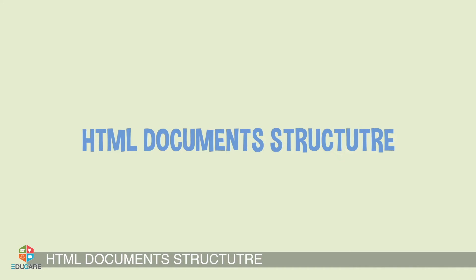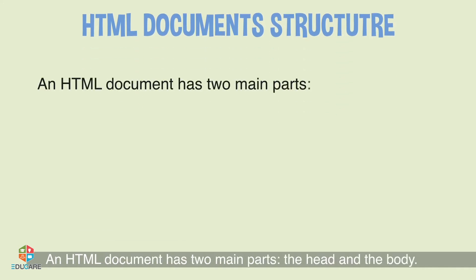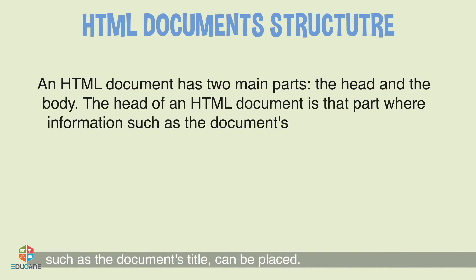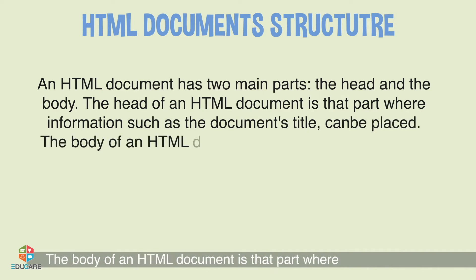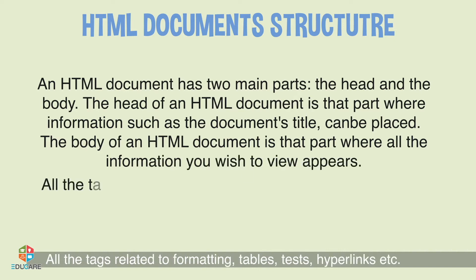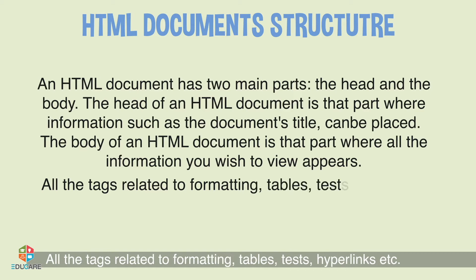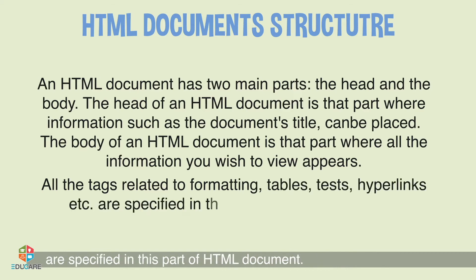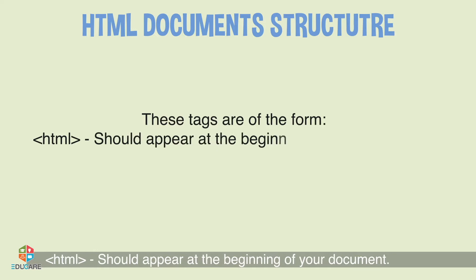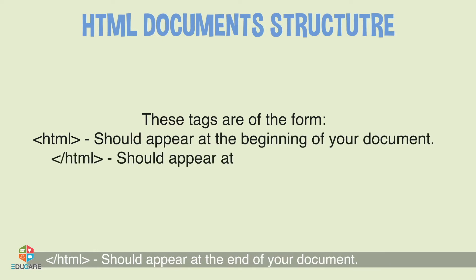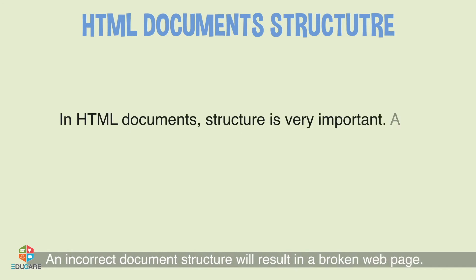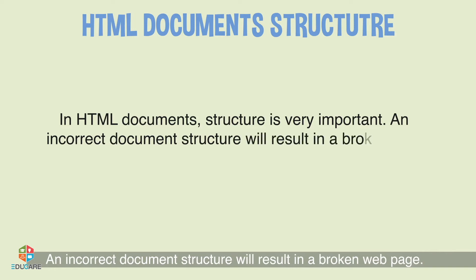HTML Document Structure: An HTML document has two main parts — the head and the body. The head of an HTML document is where information such as the document's title can be placed. The body is where all the information you wish to view appears. All tags related to formatting, tables, hyperlinks, etc. are specified in this part. The opening tags should appear at the beginning and closing tags at the end of your document. In HTML documents, structure is very important — an incorrect document structure will result in a broken web page.